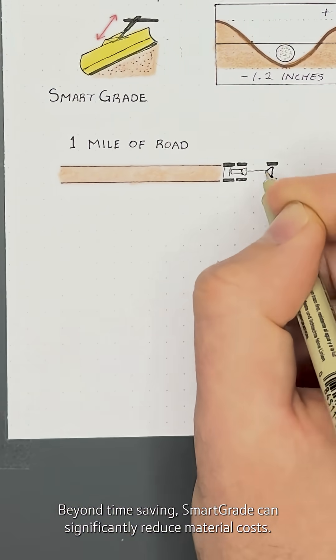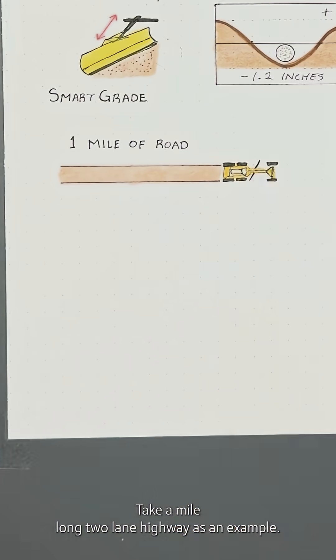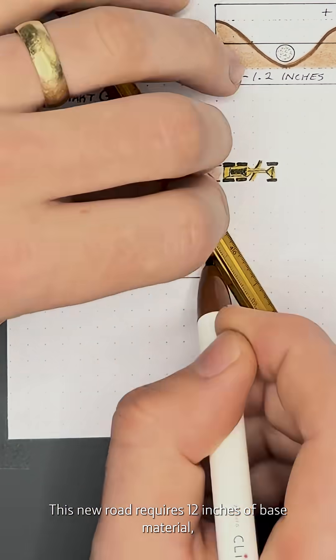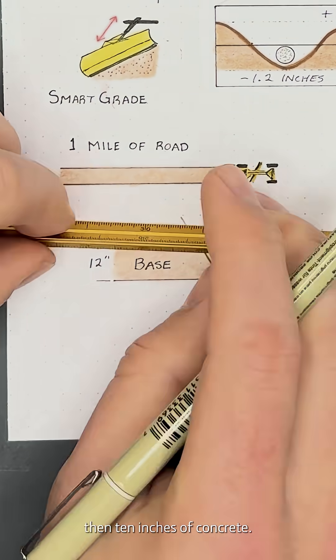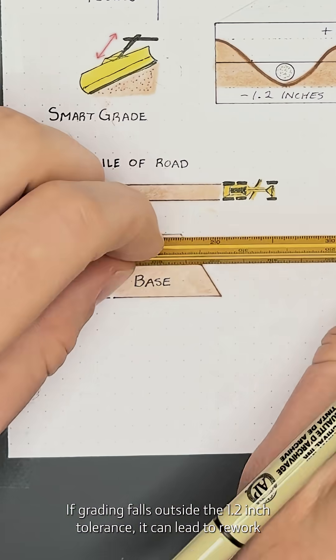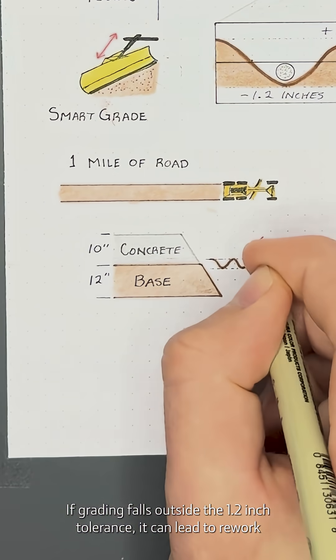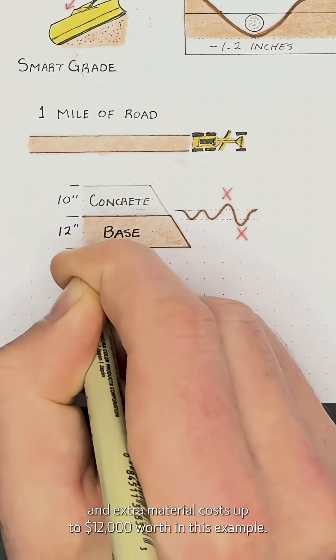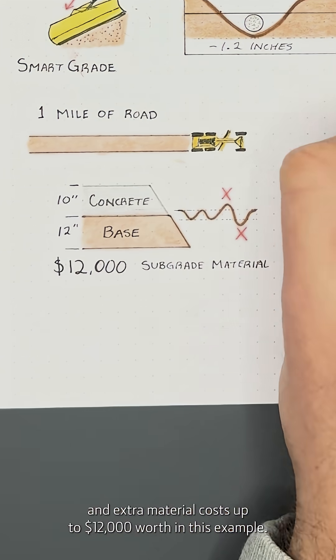Beyond time savings, SmartGrade can significantly reduce material costs. Take a mile-long two-lane highway as an example. This new road requires 12 inches of base material, then 10 inches of concrete. If grading falls outside the 1.2-inch tolerance, it can lead to rework and extra material costs, up to $12,000 worth in this example.